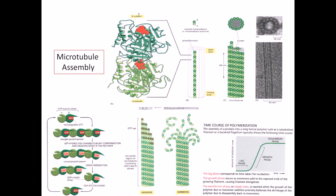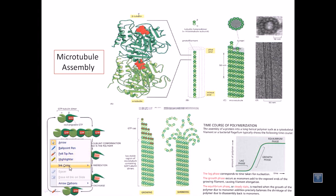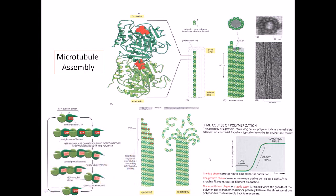Now we move on to the third kind of cytoskeleton, called the microtubule. Microtubules are the third kind of cytoskeleton. They are made up of tubulin protein. Here is the structure of a tubulin protein.